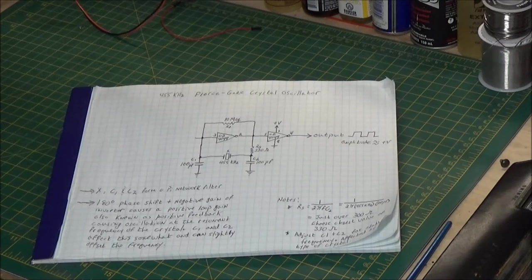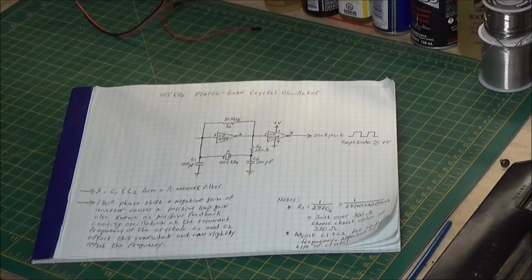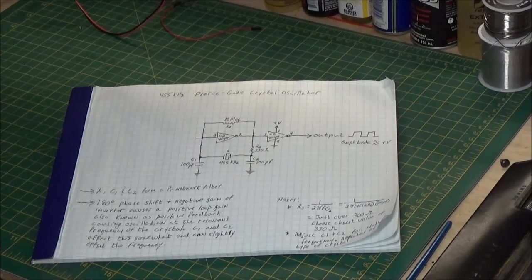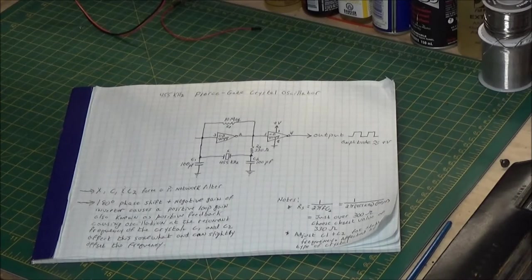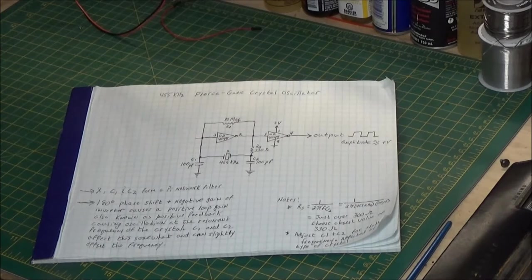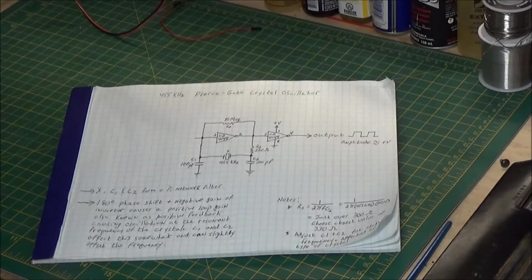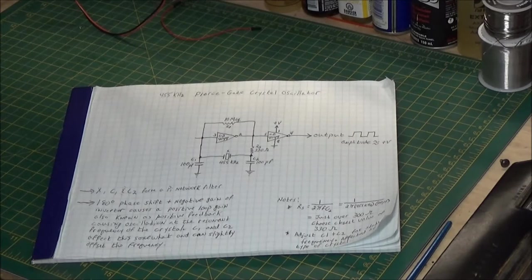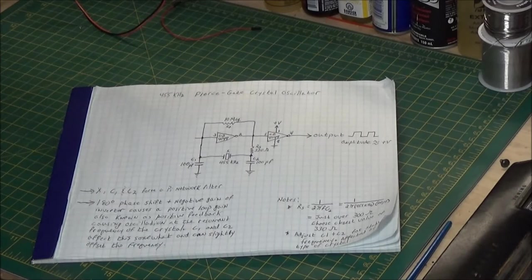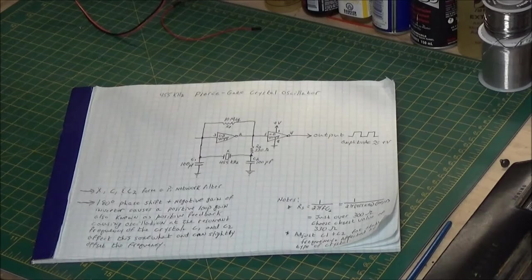I looked around at different things and winding coils wasn't really appealing. I've done that, but it can be tedious, especially the lower the frequency you go, the bigger your coils get. At 455 kHz, those coils can get pretty big. I came across this circuit called a Pierce Gate Crystal Oscillator. I had a whole bag full of these little 455 kHz crystals.